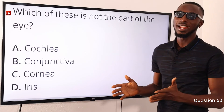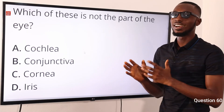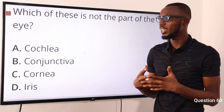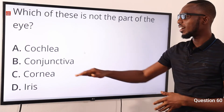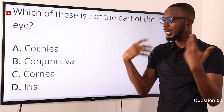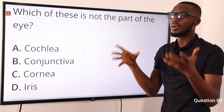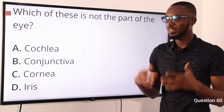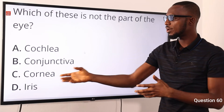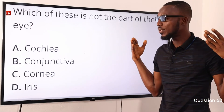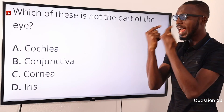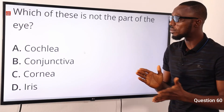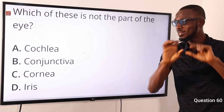Question 60: which of these is not part of the eye? The answer is cochlea. The cochlea looks like a snail shell and is responsible for hearing, not sight — the semicircular canals are responsible for balance. The conjunctiva serves a protective function for the cornea. The sclera is the outermost layer of the eye, and the cornea is formed from the sclera budging out to form a transparent structure. The iris houses the pupil through which light enters the eye. So the correct option is option A for cochlea.